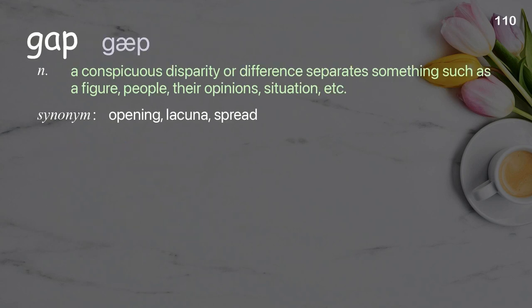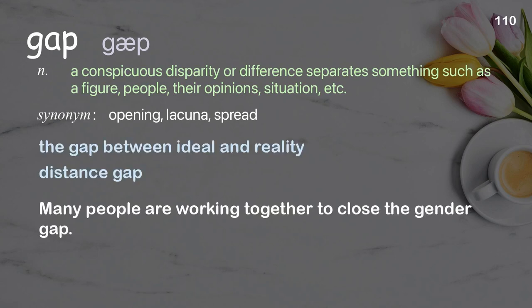Gap: a conspicuous disparity or difference that separates something such as figures, people, their opinions, or situation. Examples: the gap between ideal and reality; distance gap. Many people are working together to close the gender gap.